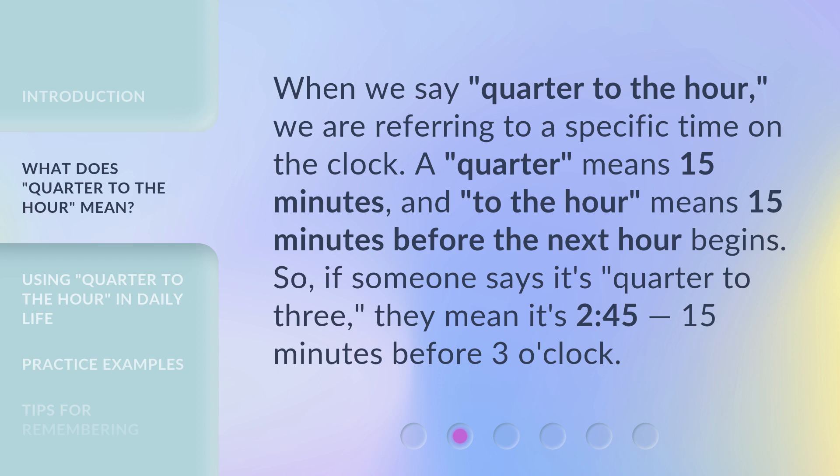So if someone says it's quarter to three, they mean it's 2:45 — 15 minutes before three o'clock.